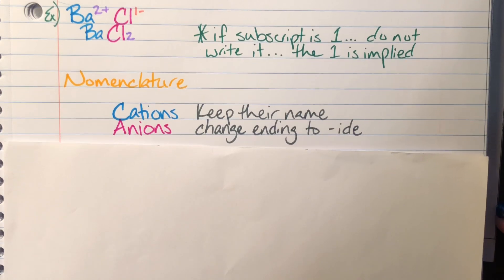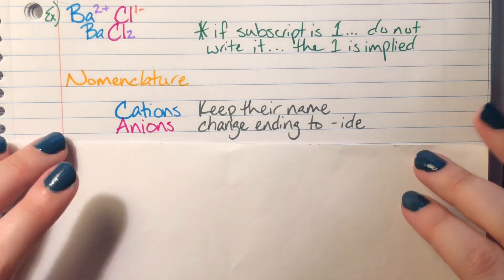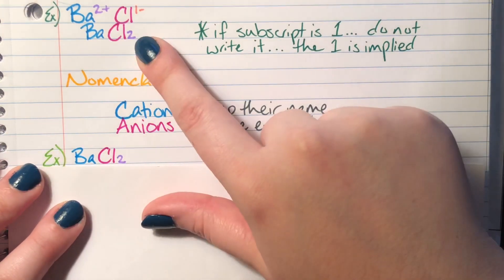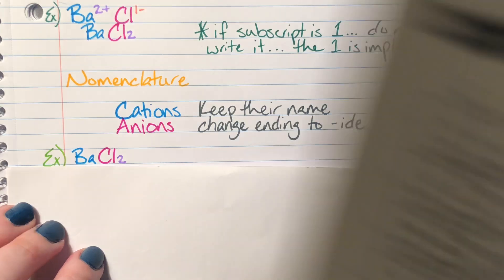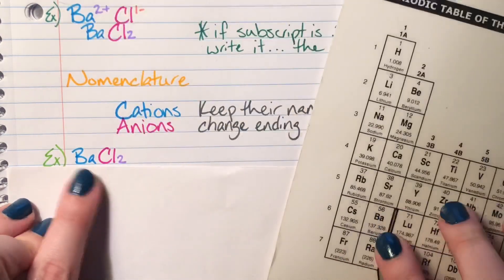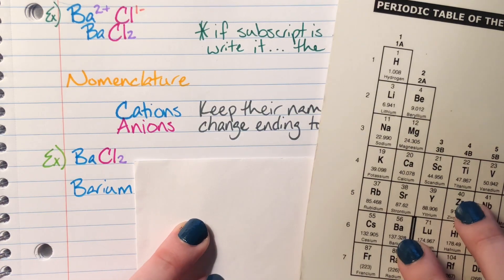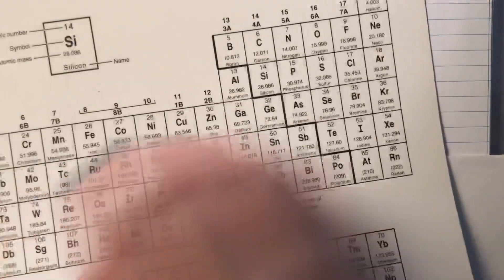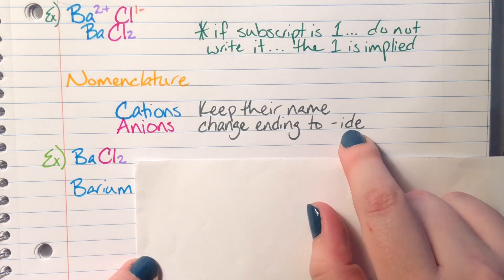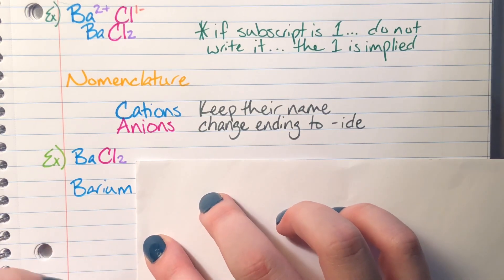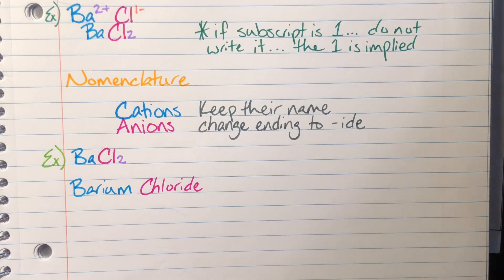Let's name the same compound: BaCl₂. Ba is barium — it's the metal and the cation, so it keeps its name: barium. Cl is chlorine — it's the anion, so it needs its street name. Chlorine changes its suffix to '-ide,' becoming chloride. The full compound name is barium chloride.